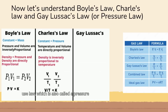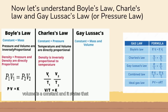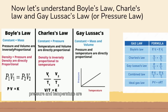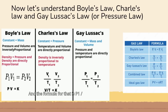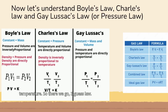And finally, we have Gay-Lussac's law, which is also called the pressure and temperature law. In this case, mass is fixed and volume is constant, and it states that pressure and temperature are directly proportional — so as temperature goes up, so does pressure. The formula is P1 over T1 equals P2 over T2, where P is pressure and T is temperature. So there we go — three gas laws, a brief introduction.